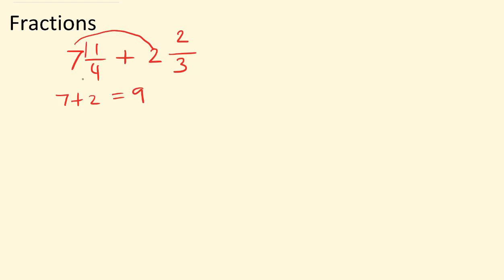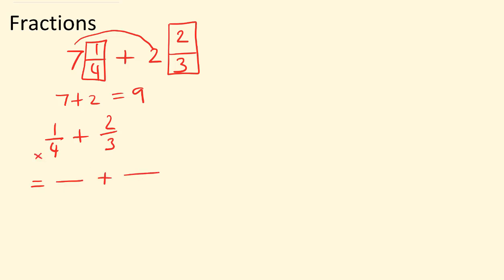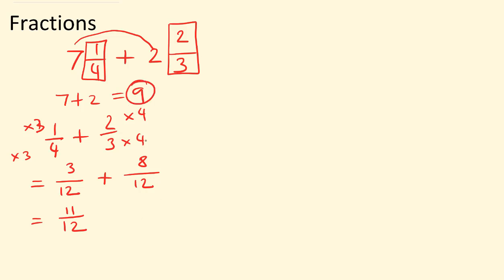Now let's work with a quarter added to two thirds. Just like our previous rule, let's find the common denominator. Let's multiply the quarter fraction by three and three, and multiply the other fraction by four, which is the opposite denominator. Then: three times four is 12, three times one is three, three times four is 12, and two times four is eight. So we have three add eight is eleven, and the denominator stays the same — eleven twelfths. Remember we had the nine left from adding the whole numbers, so our answer is nine and eleven twelfths.